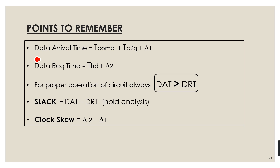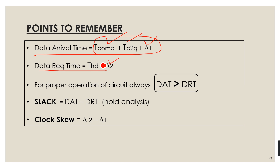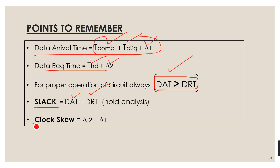Let us summarize. The data arrival time is δ1 + T_C2Q + T_com. The data required time is δ2 + T_hold. For proper circuit operation, to avoid hold violation, DAT must be greater than DRT at all times. Hold slack is defined as DAT minus DRT — note that in setup analysis, the formula was DRT minus DAT. Clock skew is defined as δ2 minus δ1, the difference in clock propagation delays to the capture and launch flip-flops.